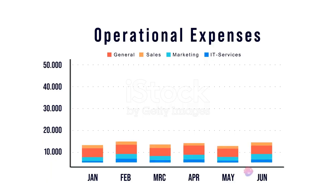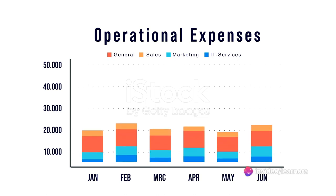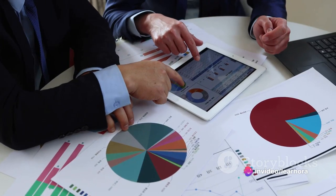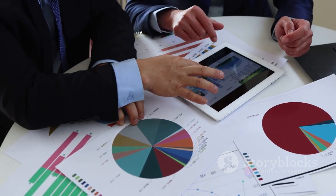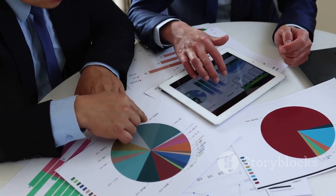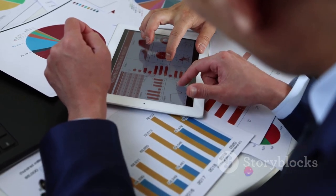These variances are critical tools that help organizations understand the discrepancies between expected and actual costs related to materials used in production. Think of direct material variance as a compass guiding businesses through the labyrinth of financial management.